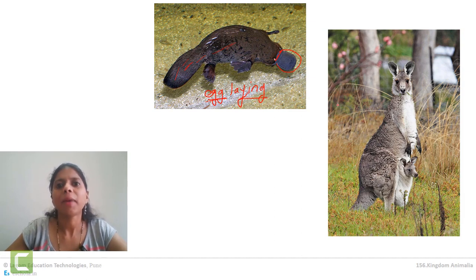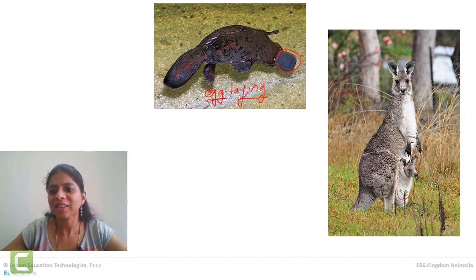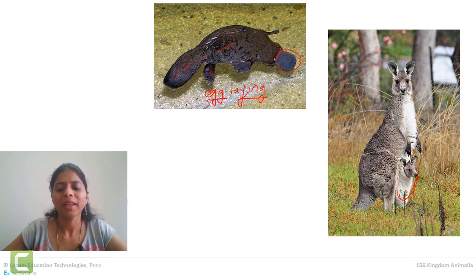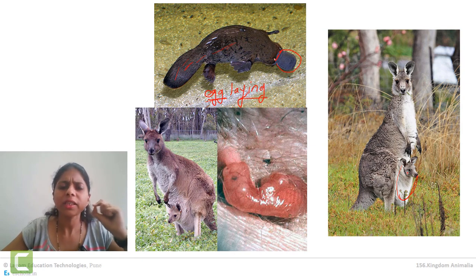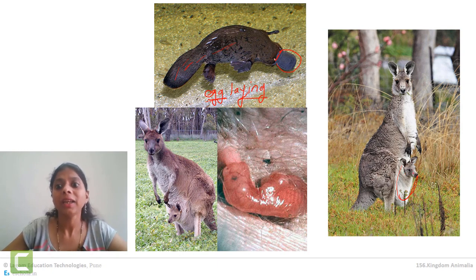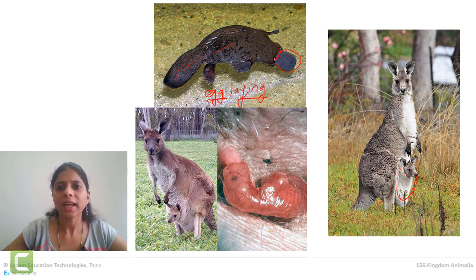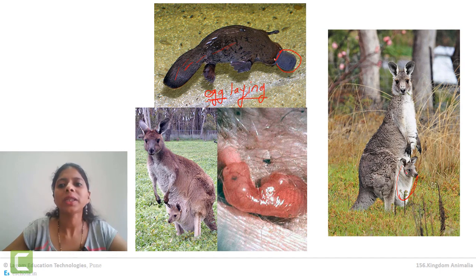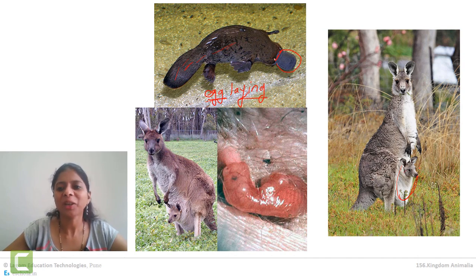Inside the pouch, there is an opening of the mammary gland — there are nipples — and through which the baby remains attached to those nipples and continuously sucks milk until it grows to a size where it can come out and start eating its food and become independent. Still for protection, it is dependent on its mother.